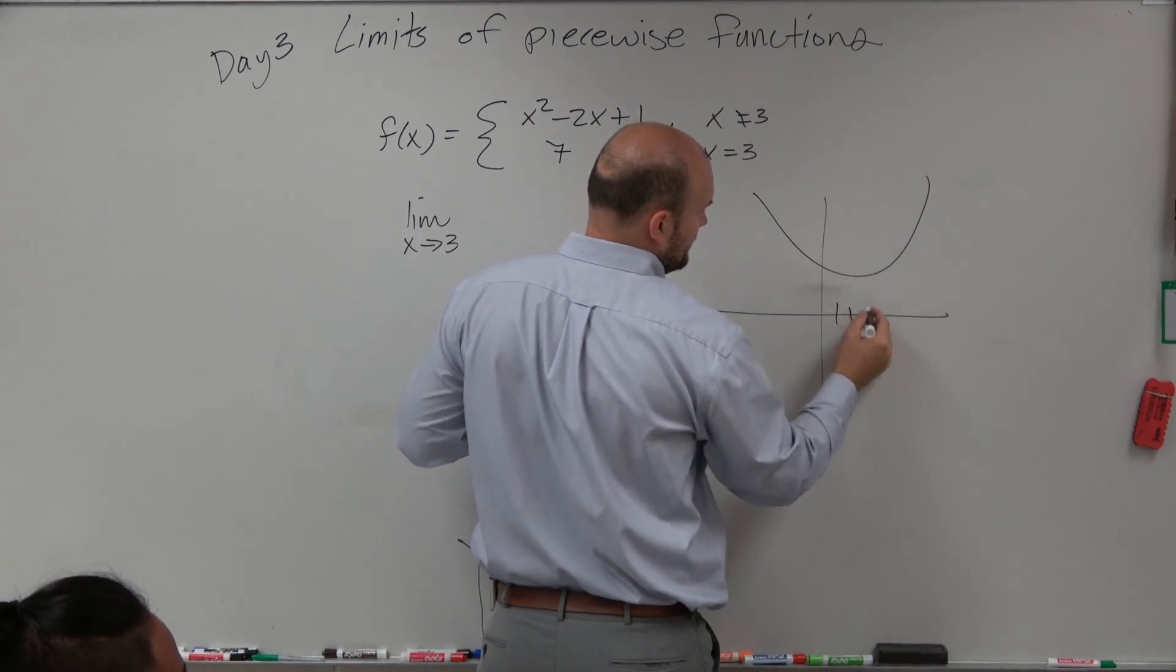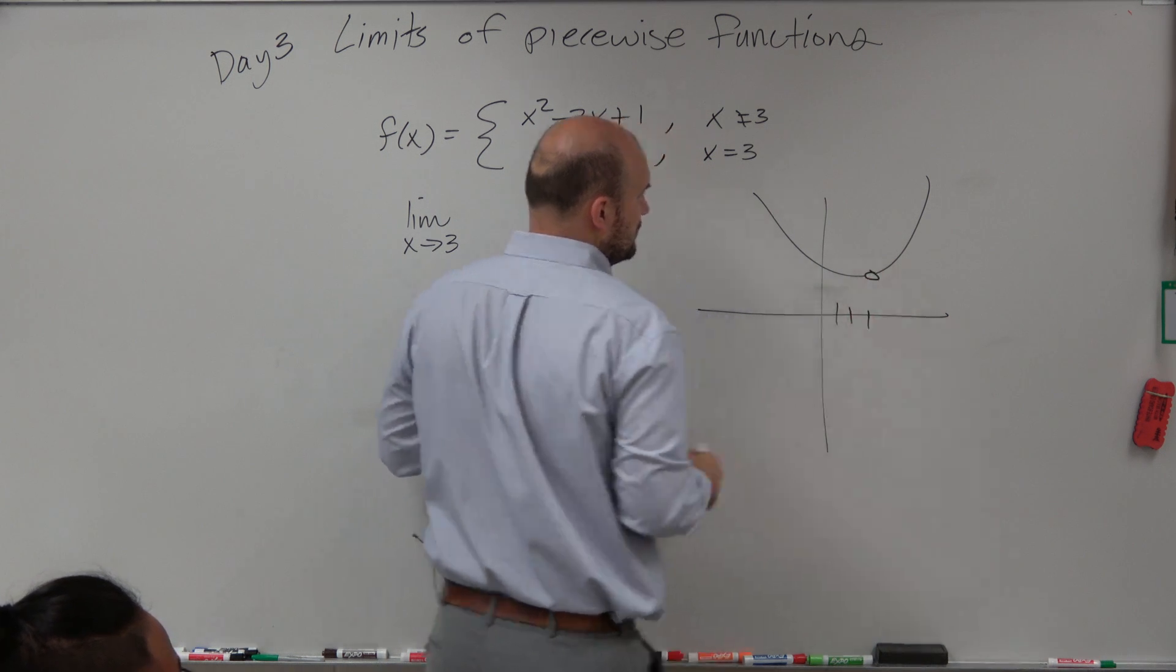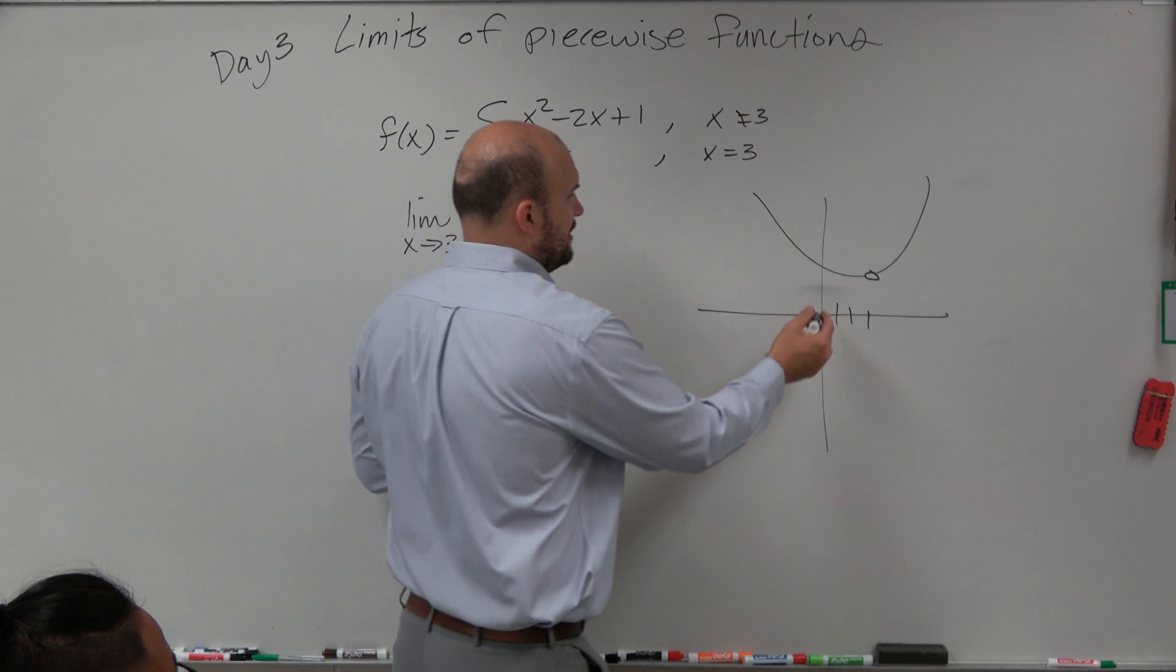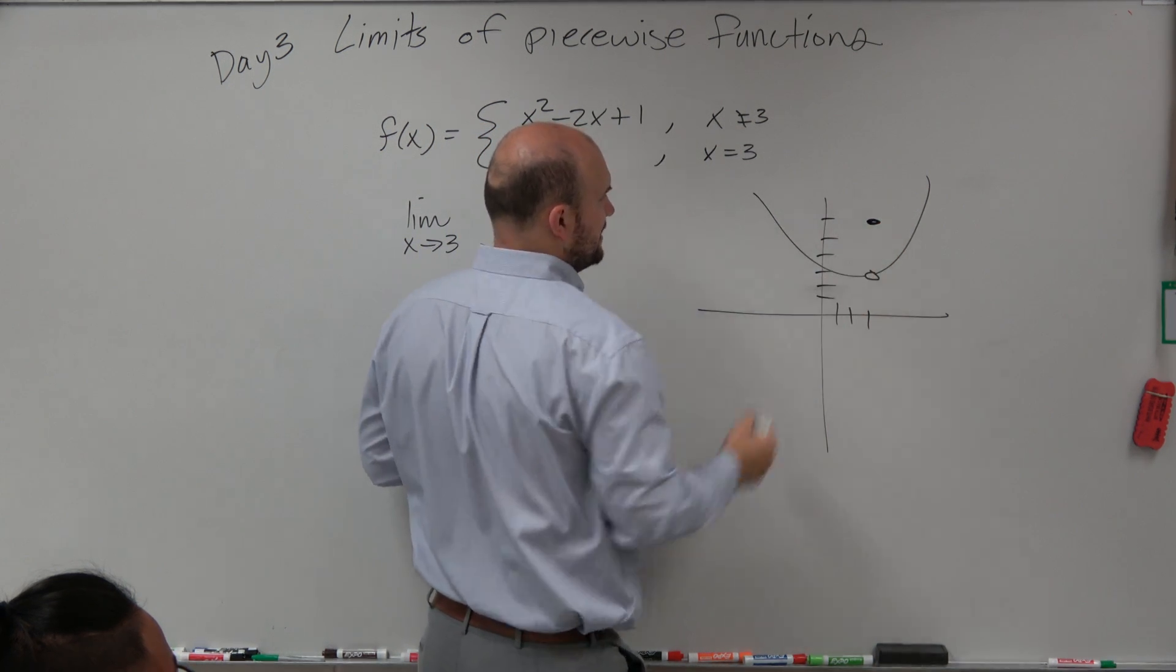And we know though at 3 there's this hole, right? Because we know it can't equal 3, and then it's like 7 at that point. So it's going to look something like this.